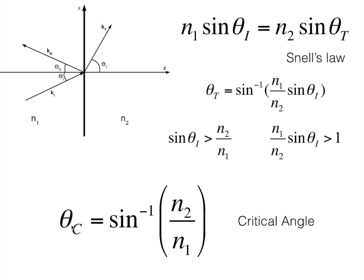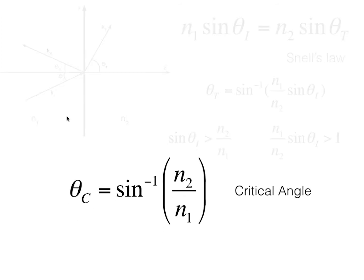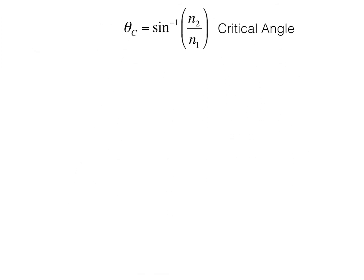And it can be written as theta c is equal to sine inverse of n2 by n1. Now, let's put this relation aside for a while. The condition under which total internal reflection occurs, as we have been taught, is this: theta i is greater than theta c.